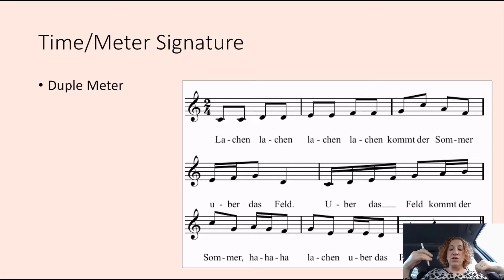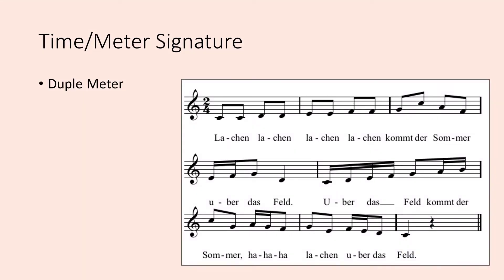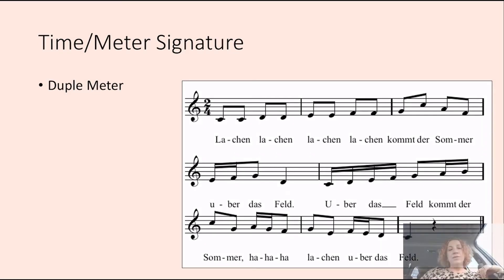So if we listen to the song, you can hear that accent. So let's listen to this song. Lachend, lachend, lachend, lachend. Komt der Sommer über das Feld. Über das Feld, kommt der lachend. Ha, ha, ha, lachend über das Feld. Okay, so hopefully you could hear that there's just that accent every other beat, right?